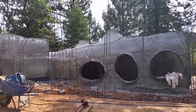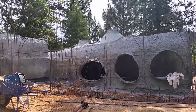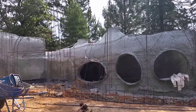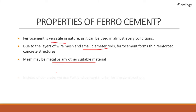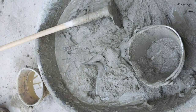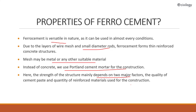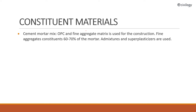Properties of ferrocement: ferrocement is versatile in nature as it can be used in almost every condition. Due to layers of wire mesh and small diameter rods, ferrocement forms thin reinforced concrete structures. Mesh may be metal or any other suitable material. Instead of concrete, we use Portland cement mortar for construction. The strength of the structure mainly depends on two major factors: the quality of cement paste and the quantity of reinforced materials used. Ferrocement is a very durable, cheap, and versatile material.